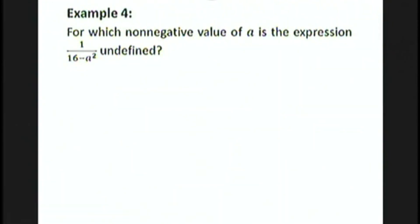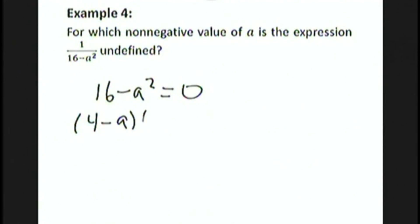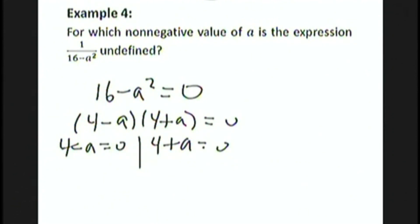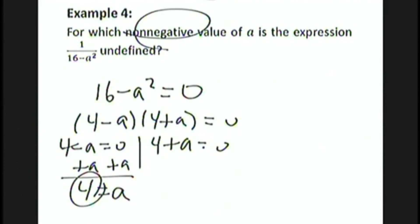For which non-negative value of a is the expression 1 over 16 minus a squared undefined? We need to check where 16 minus a squared equals 0. We can factor this as a difference of two squares and set each factor equal to 0. This gives us a equals 4 and a equals negative 4. Since the problem asks for the non-negative value, a equals 4 is the answer.